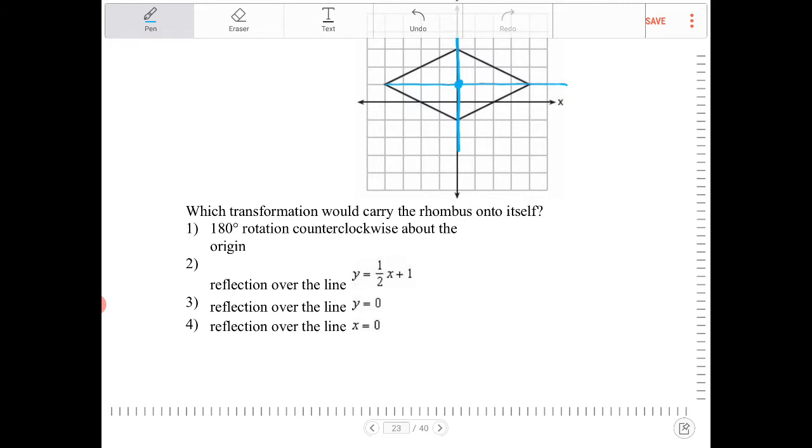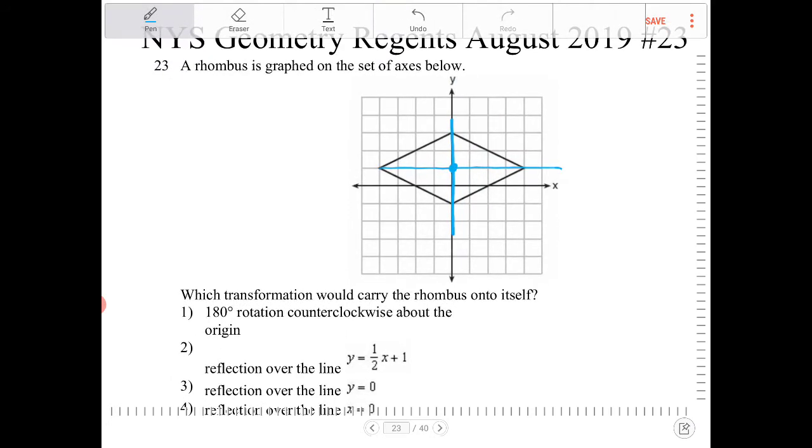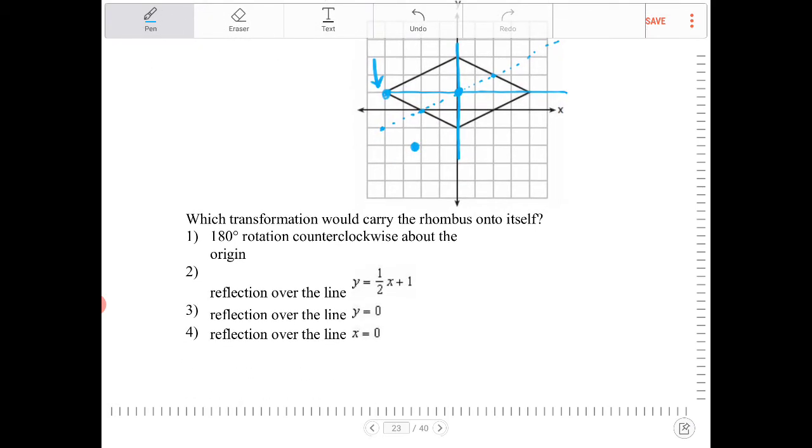Option 2: Reflection over the line y equals 1/2x plus 1. So let's draw that. If I were to reflect this over this line, this point over here would actually land somewhere over here, I would say roughly. And so it doesn't land on itself. So that's not it either.